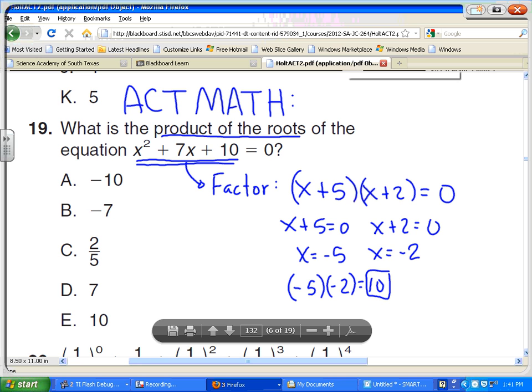Now, sometimes they'll ask for the sum of the roots. And if they were to ask for the sum of the roots, then all you would do is add the negative 5 plus negative 2 and you get negative 7.